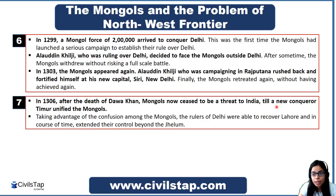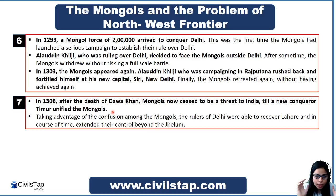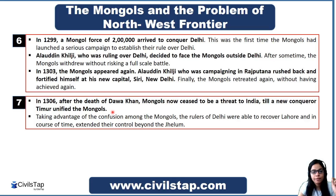After the death of Dawa Khan, the entire Mongol empire disintegrated in confusion. The rulers of Delhi were then able to recover Lahore, and in the course of time extended their control beyond the Jhelum. This is the overview of how Mongols invaded India. Timur's time period will be discussed in the next lecture when we cover the Khilji dynasty.